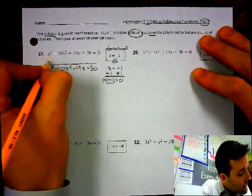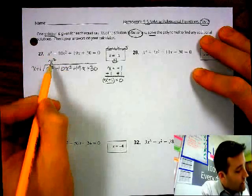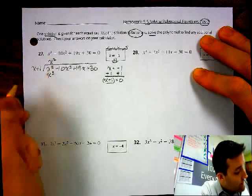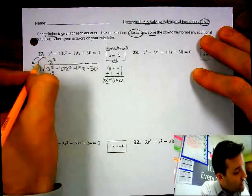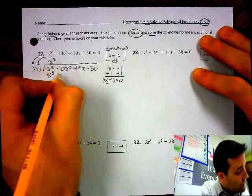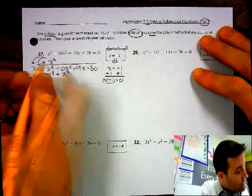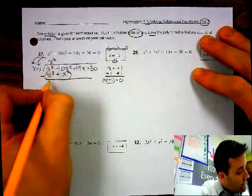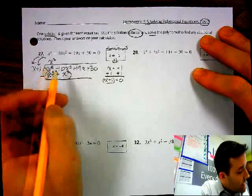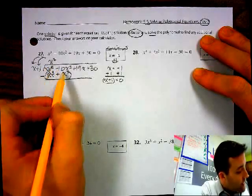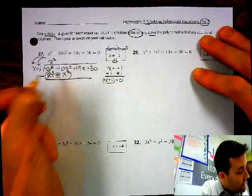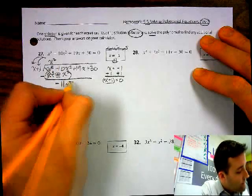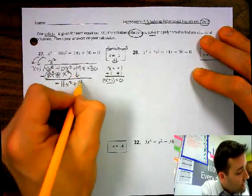So I'm going to start off with an x squared, because x squared multiplied by x is x cubed. And I also have to distribute to this positive one here. So x squared times 1 is just x squared. And then we'll subtract. x cubed minus x cubed cancels. Negative 10 minus x squared, so this positive sign becomes negative. Negative 10 minus 1x squared is negative 11x squared. Now you can bring down your plus 19x.